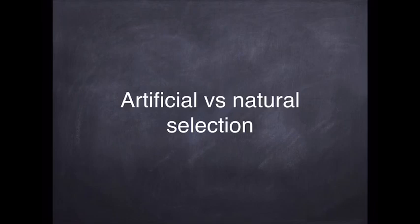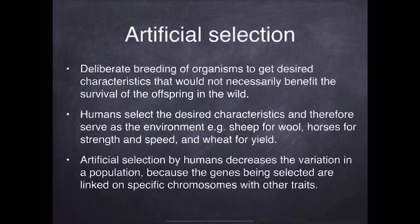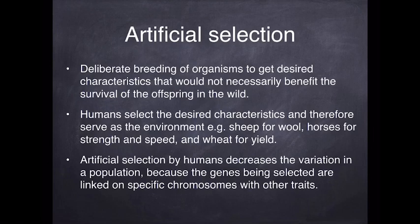We've spoken a bit about natural selection, so now let's compare it with artificial selection. Just a reminder: artificial selection is where we are specifically selecting particular traits that we see in offspring — we being human beings — and we are then artificially breeding those individuals together.